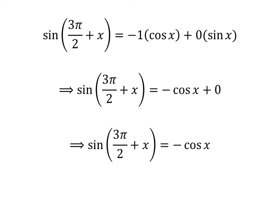As minus 1 times cosine of x is equal to minus cosine of x, and 0 times sine of x is equal to 0. So, sine of 3 times pi upon 2 plus x is equal to minus cosine of x plus 0, which is equal to minus cosine of x. Therefore, the value of sine of 3 times pi upon 2 plus x is equal to minus cosine of x.